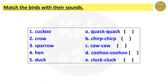Here kids need to match the birds with their sounds. First one is cuckoo — match it with option D, kuhu. Number 2, crow with option C, kaw. Number 3, sparrow with chirp. Number 4, hen with cluck. And number 5, duck with quack.